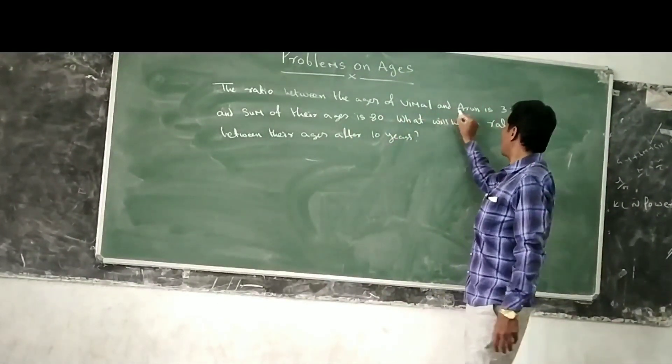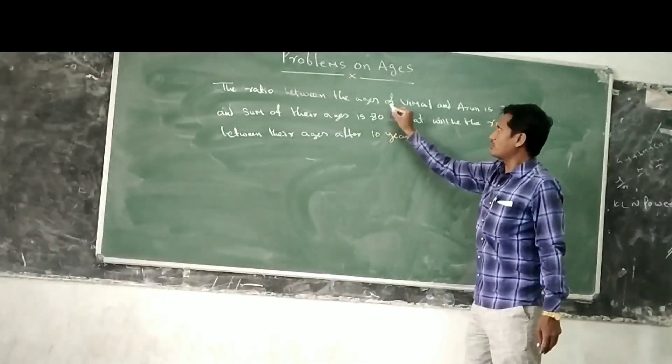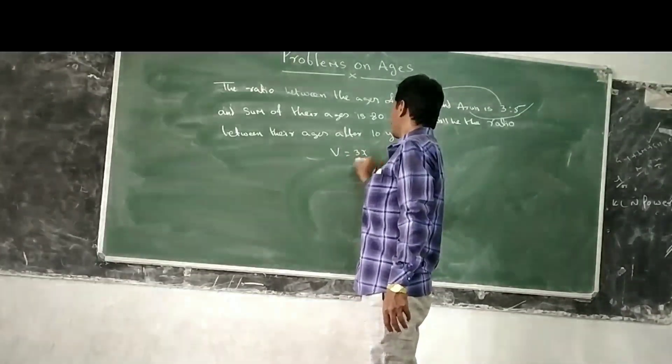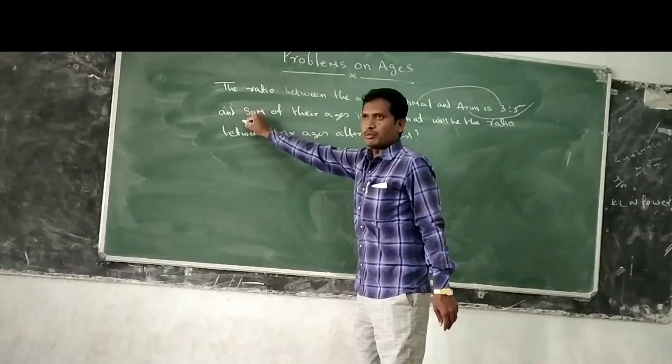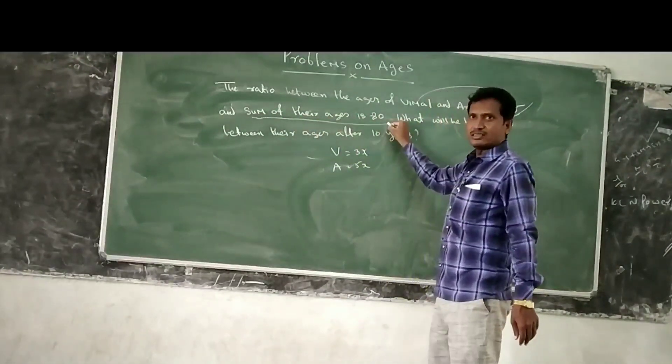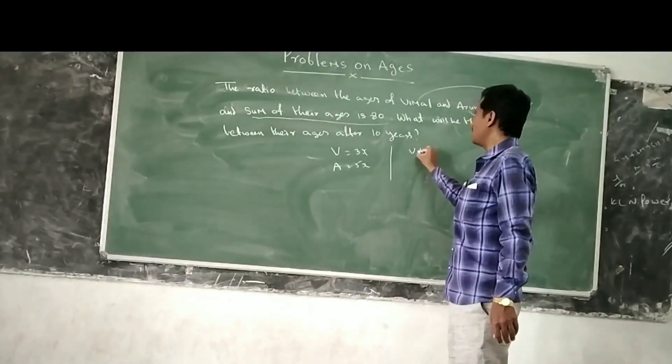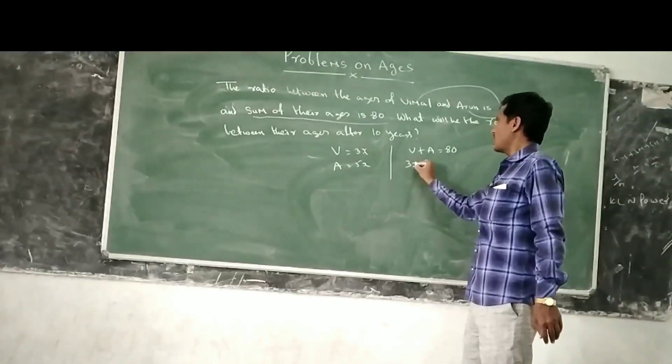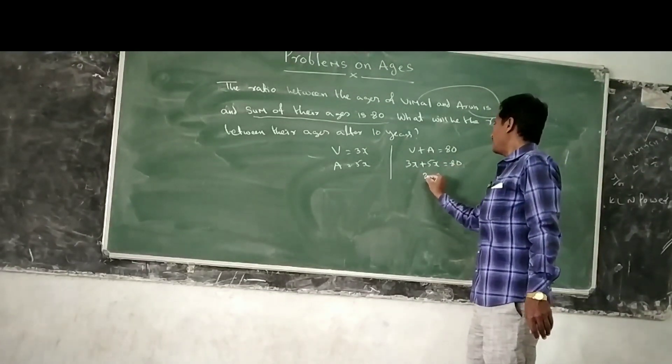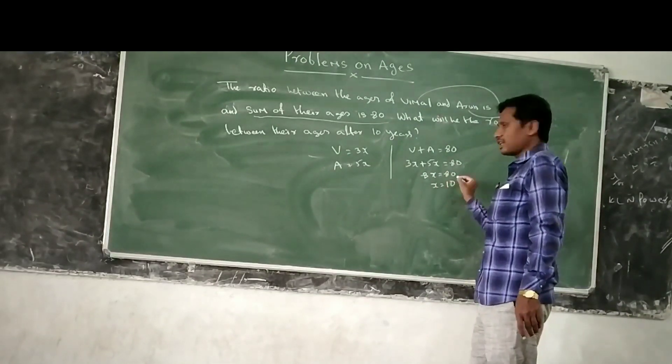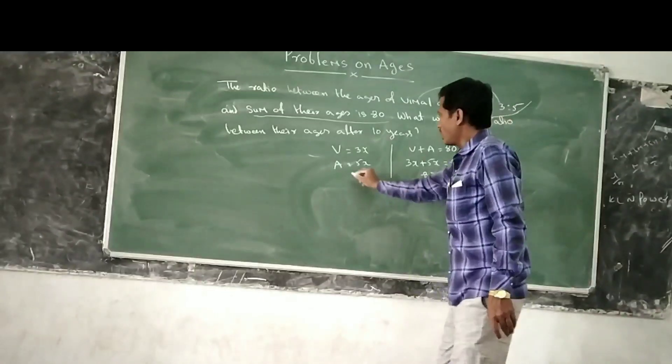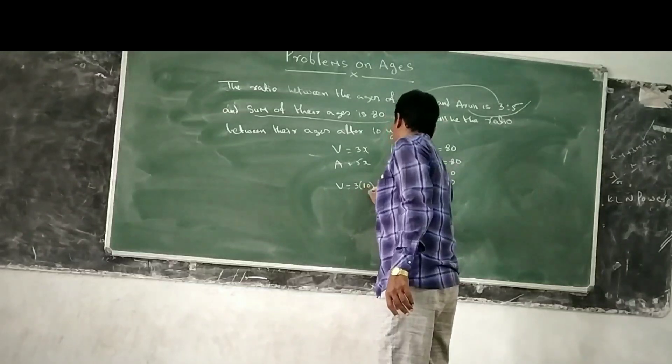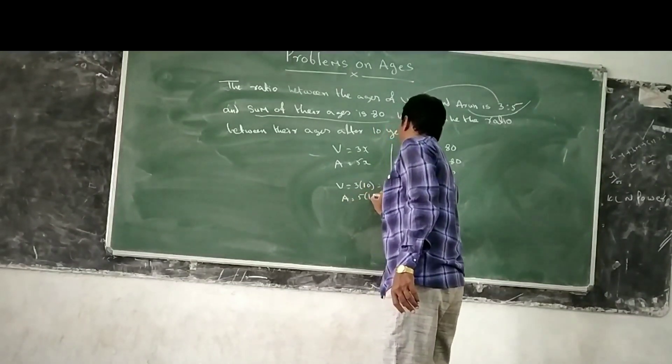Let us take the third question. The ratio between the ages of women and Harmon is 3 to 5. Women 3x, Harmon 5x. And the sum of their ages is 80. That is women plus Harmon equals 80. 3x plus 5x equals 80. 8x equals 80. x equals 10. Now, the present age of women is 3x into 10, 30 years. Harmon is 5x into 10, 50 years.